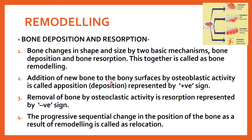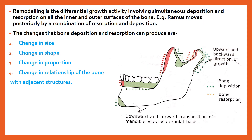The addition of new bone to the bony surface by osteoblastic activity is called deposition, represented by a positive sign. The removal of bone by osteoclastic activity is resorption, represented by a negative sign. The progressive sequential change in the position of the bone as a result of remodeling is called relocation — the bone is relocated from one position to another.